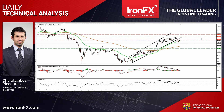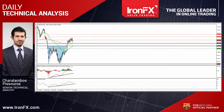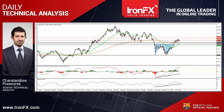A decisive dip below the 10,670 line could confirm further correction and could challenge the psychological zone of 10,500 as a support. On the daily chart, the break above the psychological zone of 10,500 on the 22nd of October signaled the completion of a double bottom formation. This keeps the medium-term outlook positive and as a result, I would consider any further short-term declines as a retracement for now.